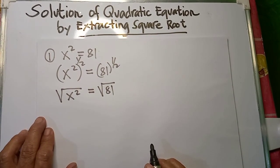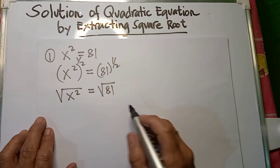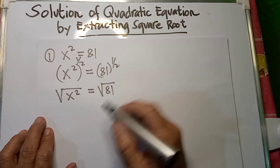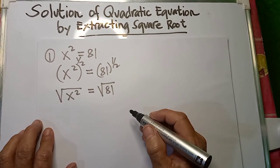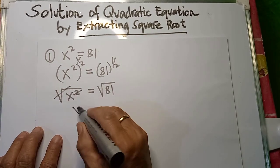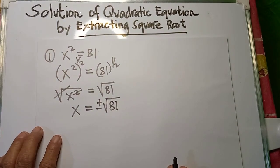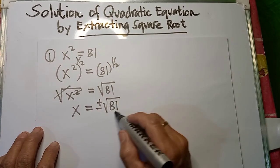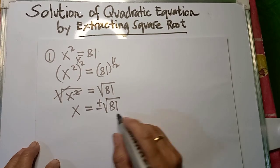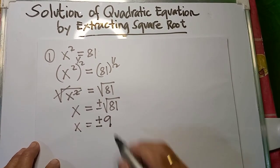So, remember that when we are extracting square root, do not forget to include the positive and negative when taking the square root of both sides. We need to apply the square root property, then solve the resulting equation. So in this case, x now becomes equal to plus or minus square root of 81. The radicand 81 is a perfect square, so this will become x is equal to plus or minus 9. Square root of 81 is 9.